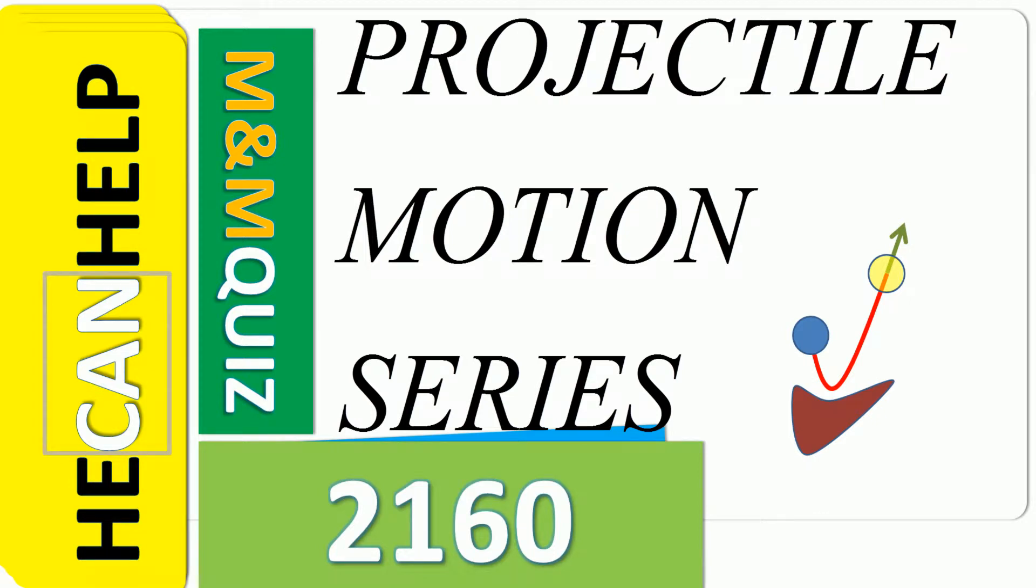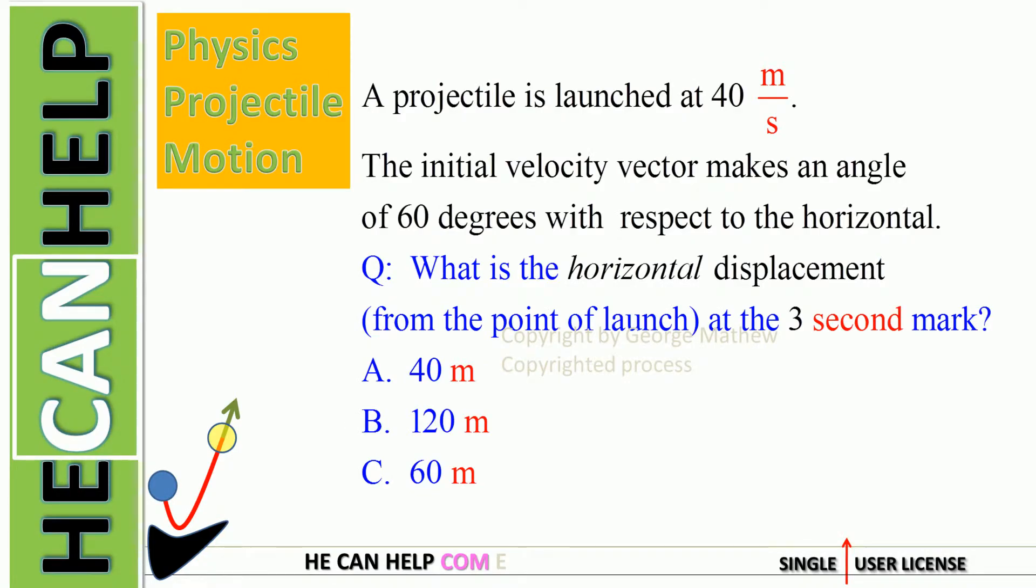Welcome to hecanhelp.com. A projectile is launched at 40 meters per second at an angle of 60 degrees with respect to the horizontal. Question: What is the horizontal displacement from the point of launch at the 3 second mark? So at t equals 3 seconds, where are we along the horizontal?